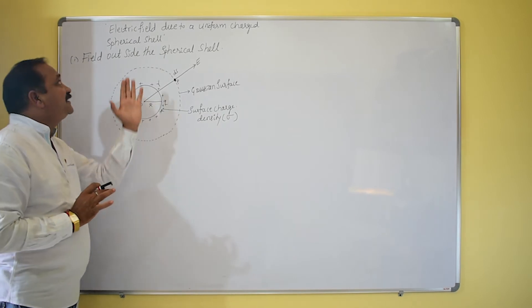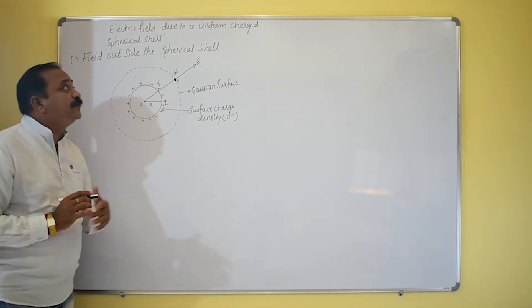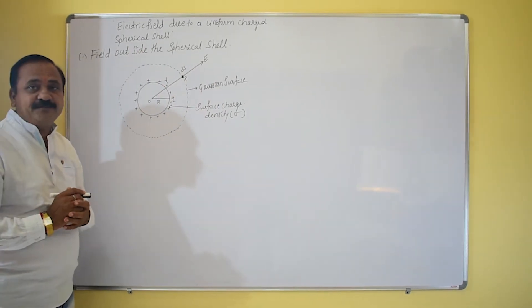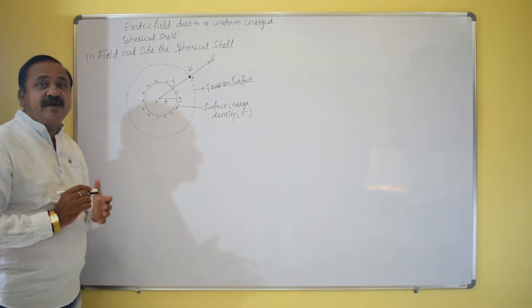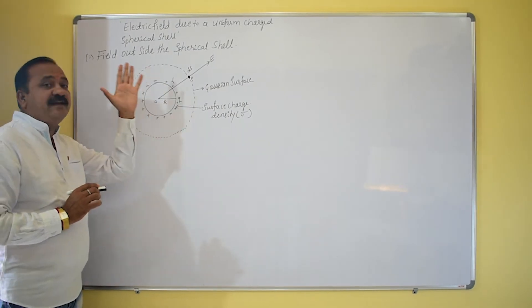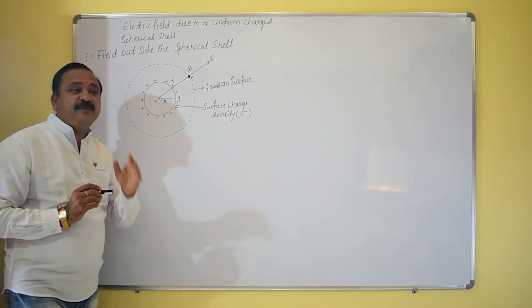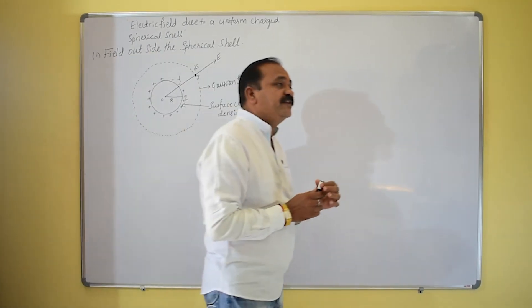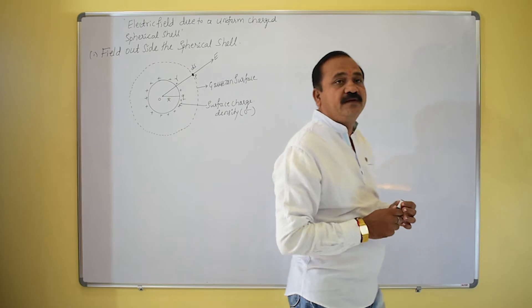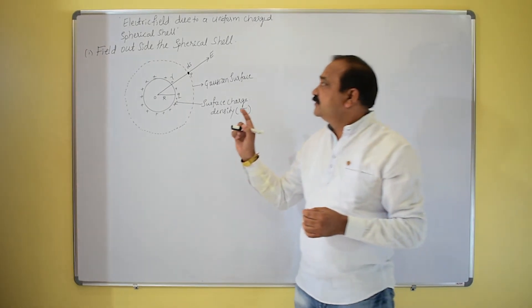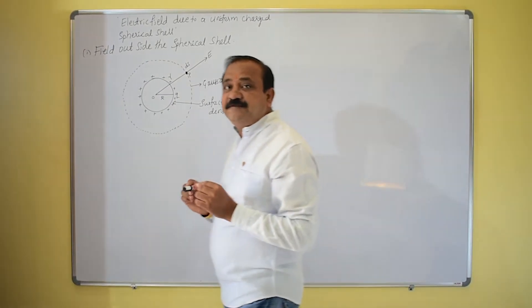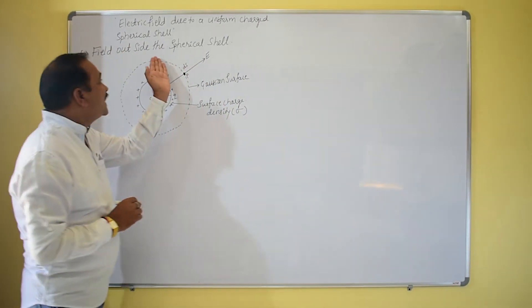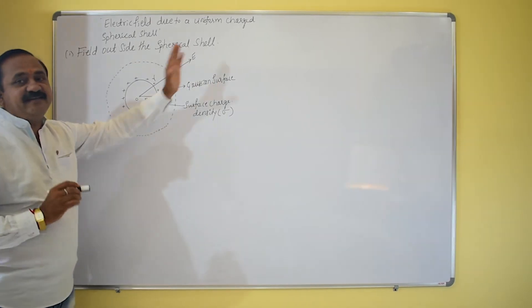For the electric field due to a uniform charged spherical shell, there are three possible conditions we are going to discuss. The first one is the electric field outside the spherical shell.